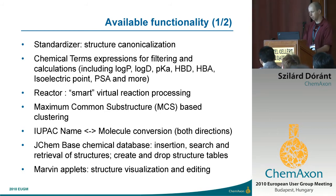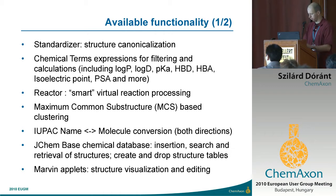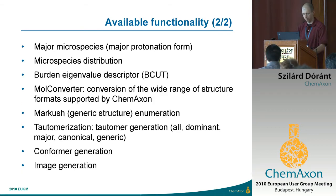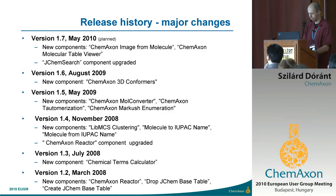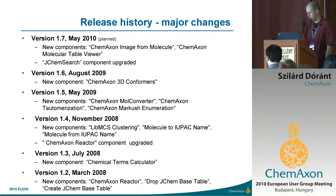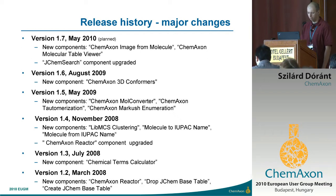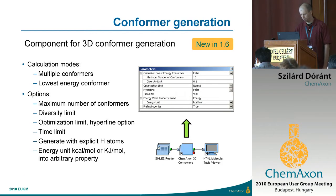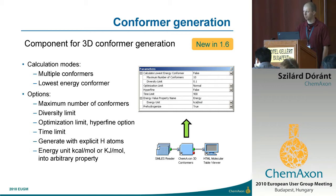Here are two slides about the available functionality. Most of our important tools are already supported as Pipeline Pilot components. Here's a brief look at the release history and the major changes. What's clearly visible here is that we have about two major releases every year, usually with new components or existing components upgraded. The conformer generation component appeared in version 1.6, which was the previous release, about last August.